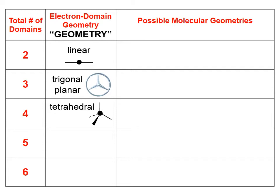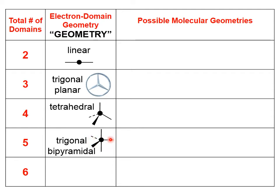If there are five total domains, that is a trigonal bipyramidal electron domain geometry. There are axial domains at the top and bottom — like the axis of the Earth going from the North Pole to the South Pole — and three equatorial domains running around the middle, like a Mercedes-Benz symbol laid horizontally. Together, these make up the trigonal bipyramidal electron domain geometry.